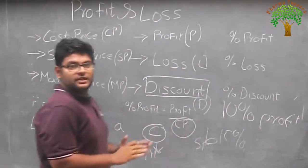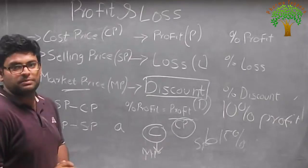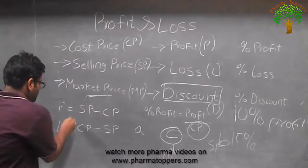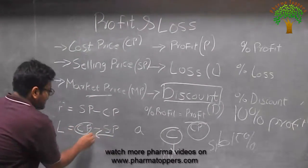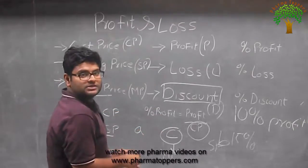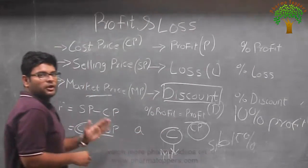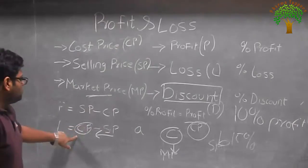It is never to be considered or never to be counted on a selling price. We always have to back calculate the cost price from the selling price and then only we can go for the 10% profit onto the cost price. Because always the profit and loss would be on the cost price.